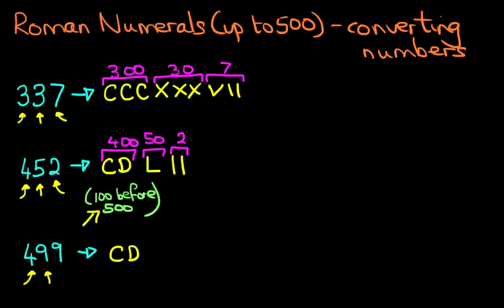Next, we do the tens. It's 9. That is 90. How do we write 90? It is X, C. That is 10 before or less than 100. That is 90.